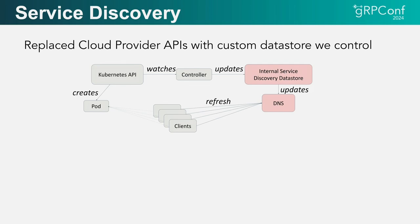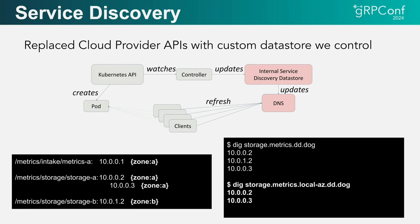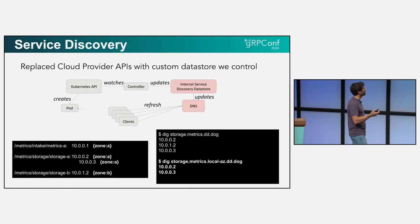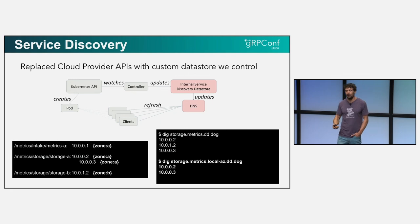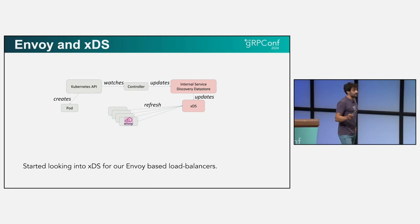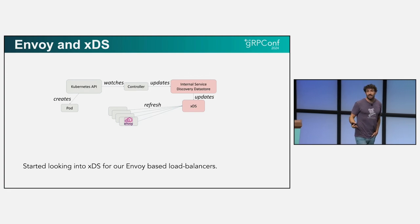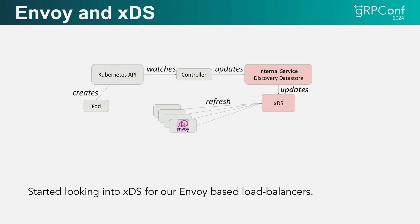In addition to that, it also gave us the opportunity to start customizing the serving path. For example, we started storing the availability zone of each endpoint in addition to just the endpoint IP address. This let us serve more interesting queries, such as giving me the endpoints in my availability zone, which can cut on cross-AZ costs — cloud providers typically charge for that. Finally, this lets us start experimenting with delivering updates through a different protocol. In the case of Envoy, which we used for standalone proxies, this meant XDS.